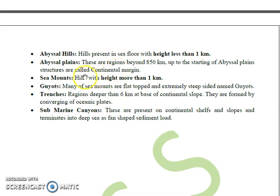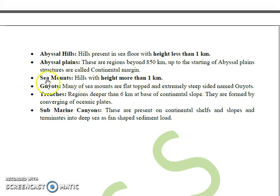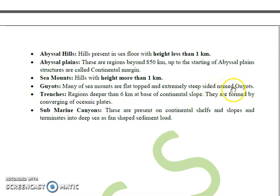Coming to the next feature, which is seamounts. These are hills with an altitude of more than 1 km. This question has been asked two times in UGC. Many seamounts are flat-topped and extremely steep-sided — these are called guyots.